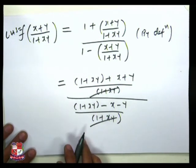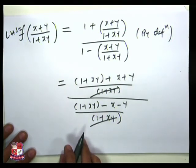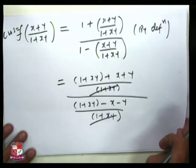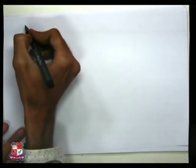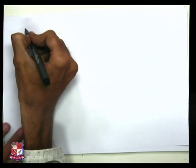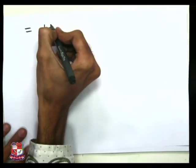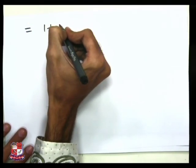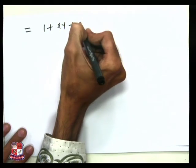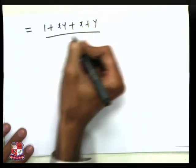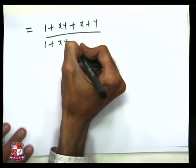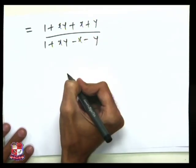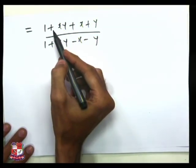Since the (1+xy) terms cancel, we are left with (1+xy+x+y) upon (1+xy-x-y).